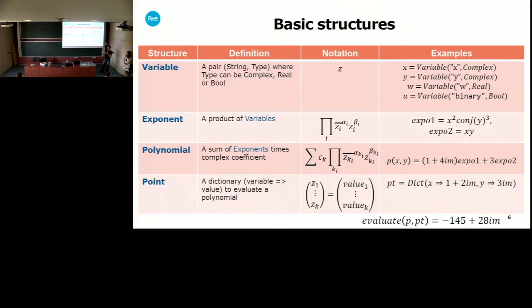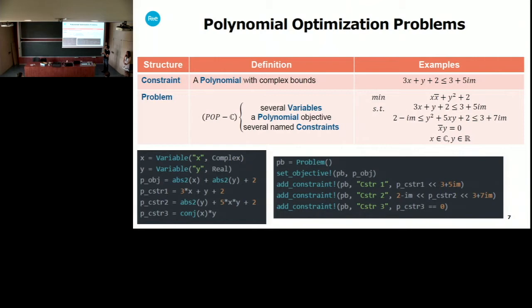From these exponents we can build polynomials, which are simply linear combinations of exponents with possibly complex coefficients. We could define a polynomial in such a way. Now that we have a polynomial we can also evaluate them using the point structure, which simply associates a value to each variable, and then we can evaluate the polynomial at the given point. We only lack a structure for the constraints and then the problem structure itself. A constraint is simply a complex polynomial and two complex bounds, one upper and one lower.